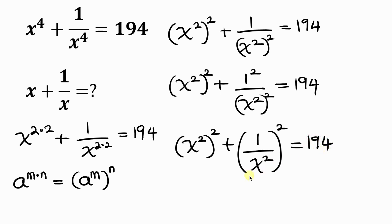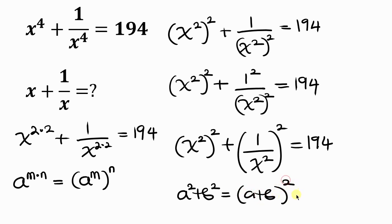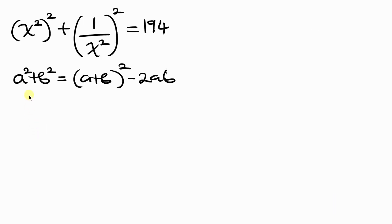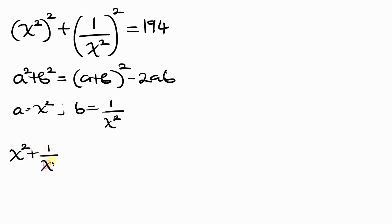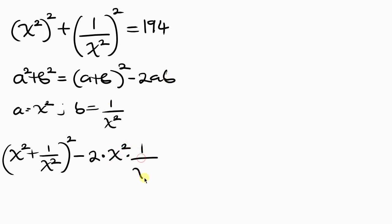Our next step is to use an algebraic identity: a squared plus b squared equals a plus b all raised to the power of 2, minus 2ab. In this context, a is x squared and b is 1 over x squared. So we write: x squared plus 1 over x squared, all raised to the power of 2, minus 2 times x squared times 1 over x squared, equal to 194.